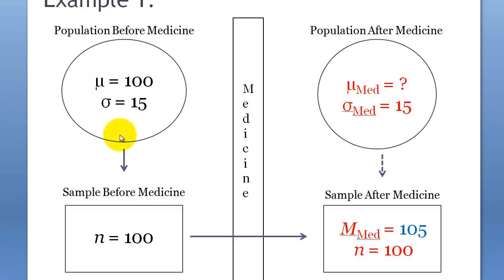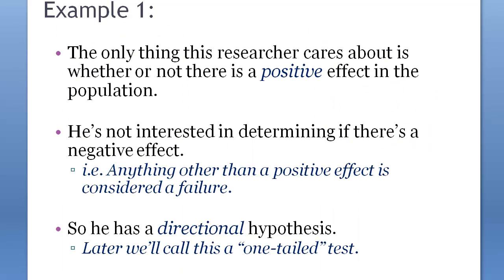So this is what we know: the population mean IQ is 100, we took a sample of 100, and the sample mean was 105. The only thing the researcher cares about is whether there's a positive effect in the population — he's not interested in determining a negative effect. He's probably confident there's some positive effect and no chance of a negative effect, so he has a directional hypothesis.